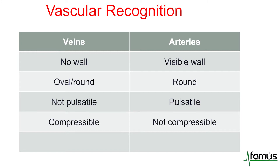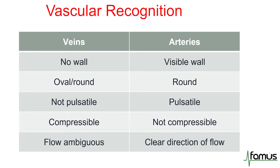Veins will be compressible whereas arteries are generally not compressible, except in shock states where the systemic arterial pressure might be low. And finally, in arteries you usually have a very clear direction of flow, whereas in veins the flow can be ambiguous or not present at all.